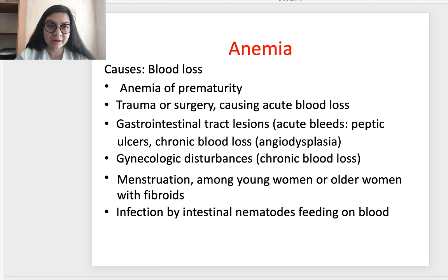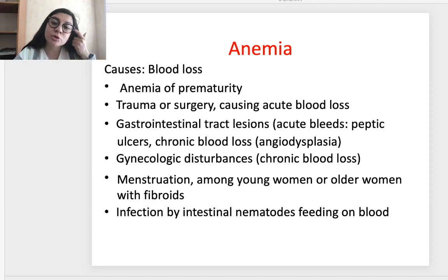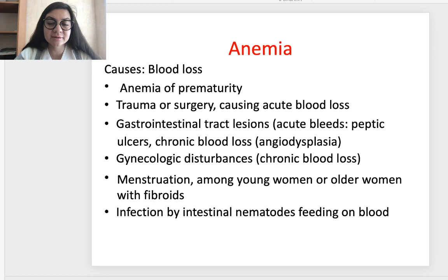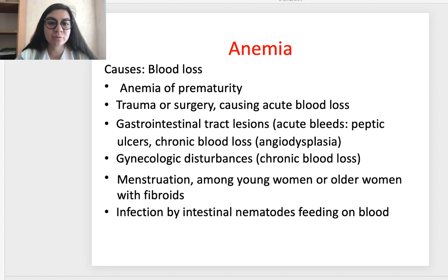Hemolytic anemias can also be extrinsic or extracorpuscular, involving antibody-mediated or mechanical trauma to red blood cells. Causes of blood loss include trauma or surgery causing acute blood loss, gastrointestinal tract lesions such as peptic ulcer or angiodysplasia causing chronic blood loss, gynecologic causes including menstruation and fibroids in female patients, and infections by intestinal nematodes feeding on blood.